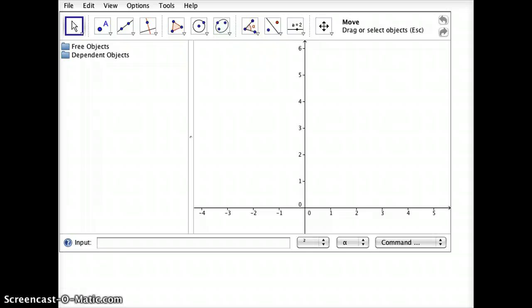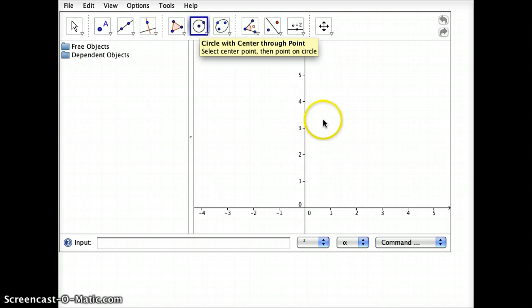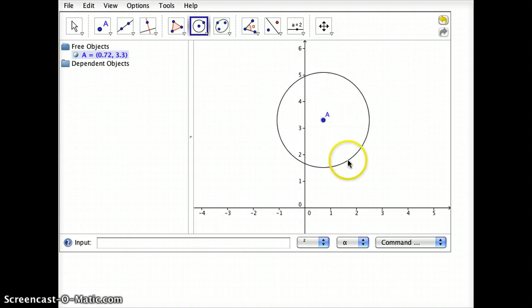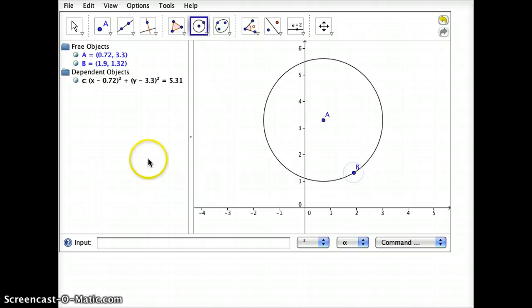GeoGebra, if you haven't used it before, is a mathematical graphical visualization tool. You can test out a number of different properties. For example, if I wanted to demonstrate the inscribed central angle theorem to, say, Math 9 students, all I would need to do is simply choose my circle tool just by clicking on it. Just click anywhere on the screen and pull it out so that I have a circle.